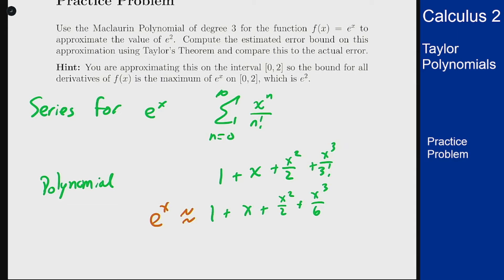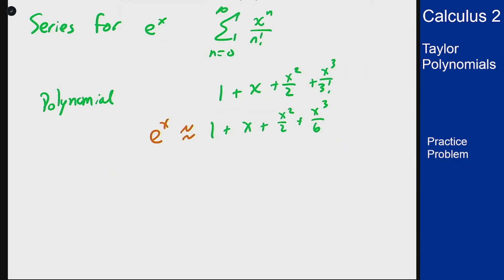Now 2 is not great so it might not be a great approximation but we can see what we get out of it. For this we're approximating e squared by plugging in 2 to this polynomial. So it should approximately equal 1 plus 2 plus 2 squared over 2 plus 2 cubed over 6, or 1 plus 2 plus 4 over 2 is 2 plus 8 over 6 which is 4 thirds. That's 5 plus 4 thirds or that is 19 thirds.